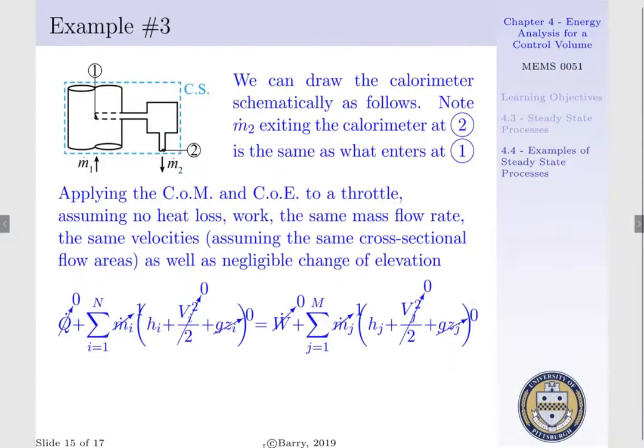Now, we can schematically draw our calorimeter as follows. We have a large pipe in which m1 is entering. m1 is the mass flow rate of our liquid vapor mixture. We insert a small tube into this large pipe to siphon off a small portion of this fluid. This goes through our calorimeter and exits at state 2 to atmosphere, such that we have m2 within our system. m2 exiting at state 2 is the same as our mass flow entering at state 1.